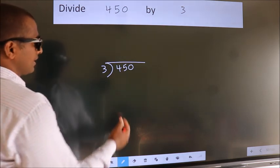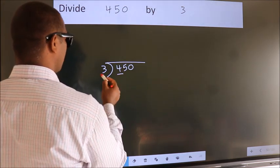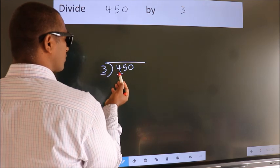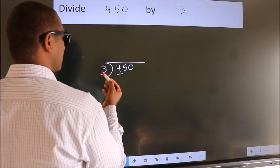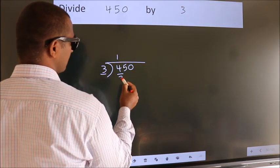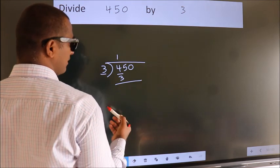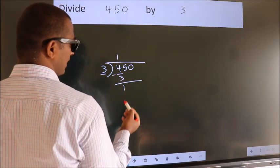Next. Here we have 4. Here 3. A number close to 4 in 3 table is 3 1s 3. Now we should subtract. We get 1.